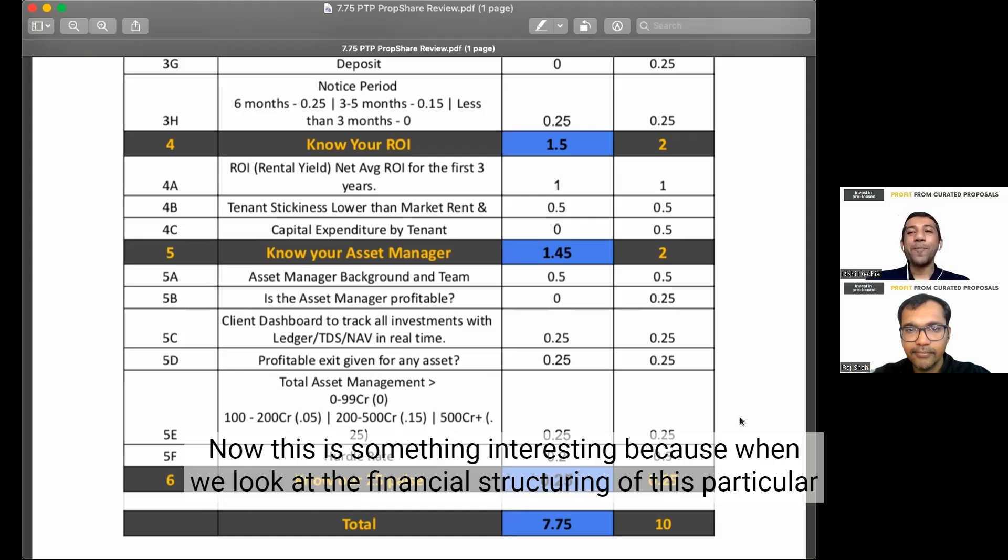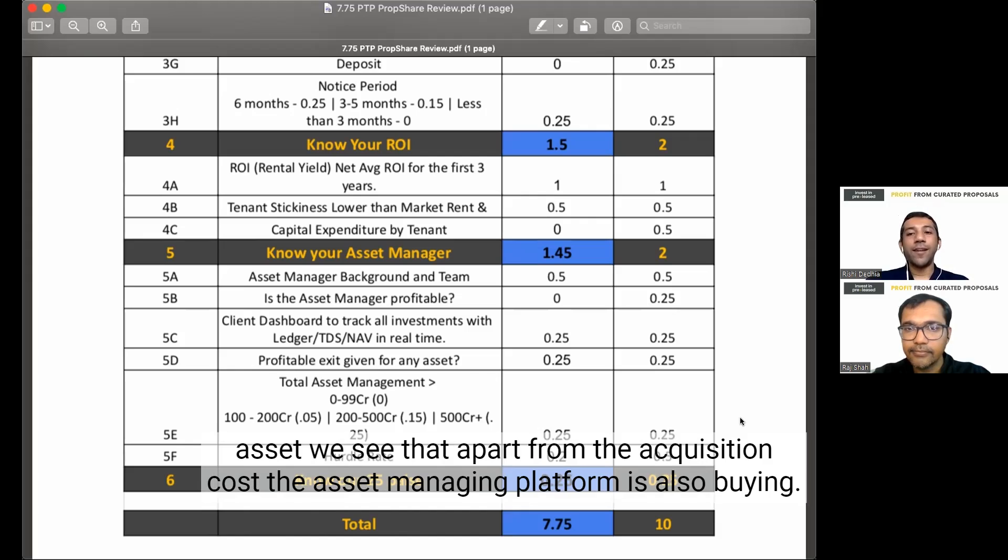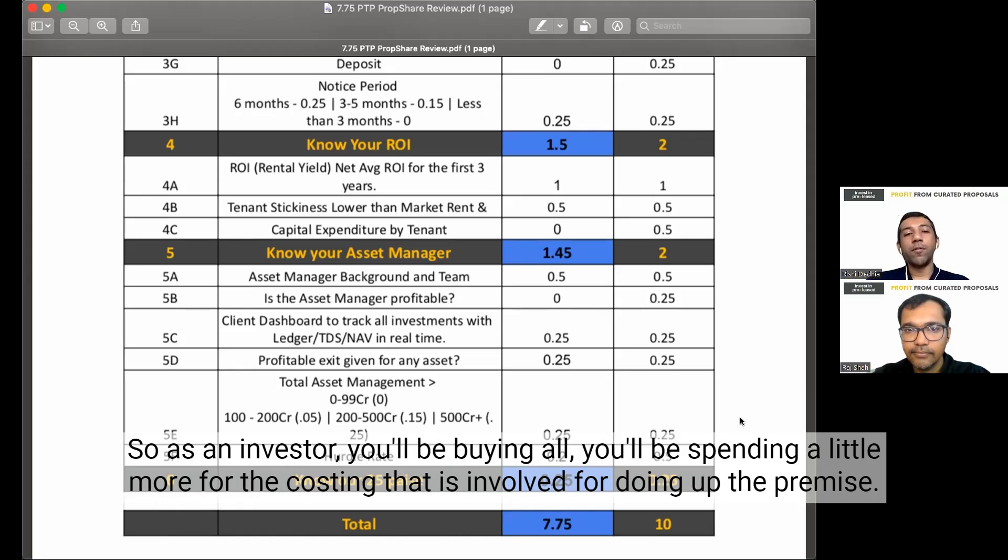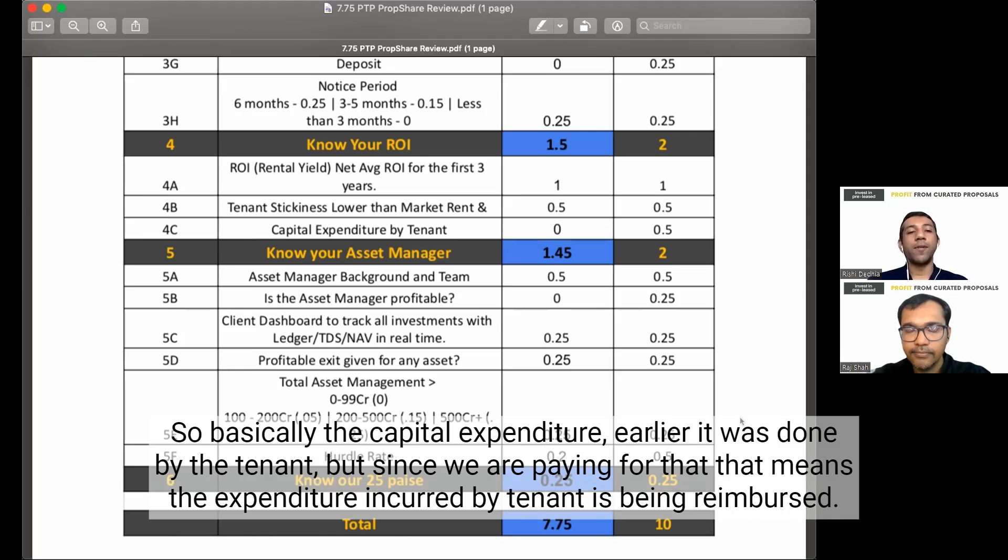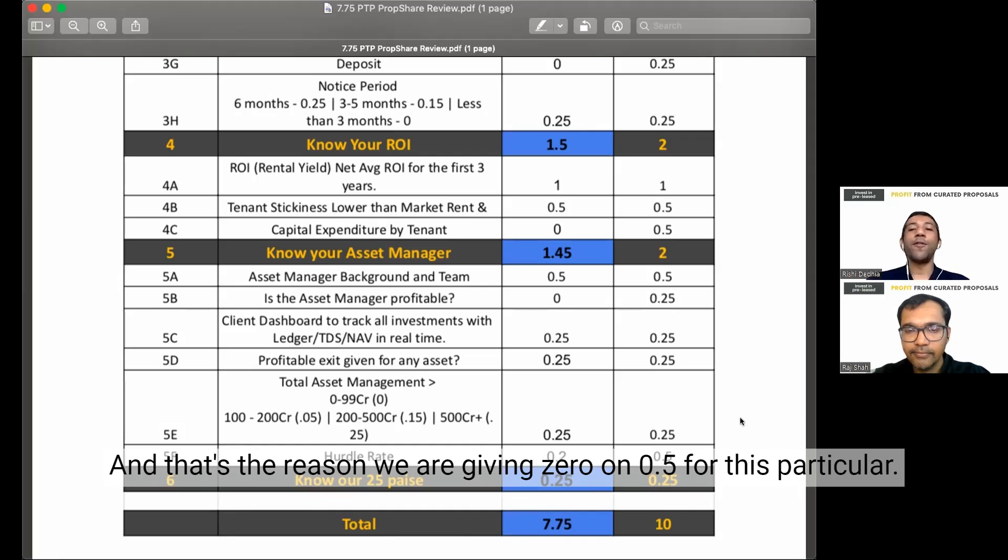Now, capital expenditure by tenant. This is something interesting because when we look at the financial structuring of this particular asset, we see that apart from the acquisition cost, the asset managing platform is also buying. So as an investor, you will be buying or you will be spending a little more for the costing that is involved for doing up the premise. So basically the capital expenditure. Earlier, it was done by the tenant but since we are paying for that, that means the expenditure incurred by tenant is being reimbursed and that's the reason we are giving 0 on 0.5 for this particular point.